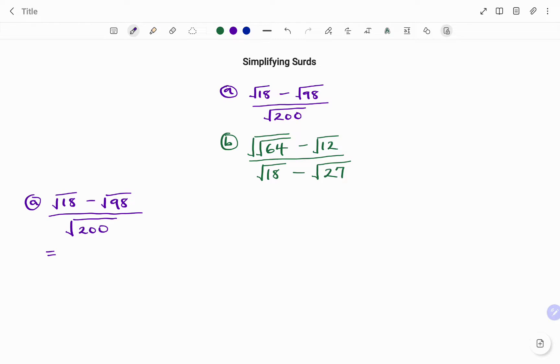So therefore, breaking down root 18, root 18 will be root of 9 times 2. 9 times 2 is 18, minus, if I break down root 98, I have that as 49 times 2. I'm going to do the same for our denominator. Root of 200 becomes 100 times 2.